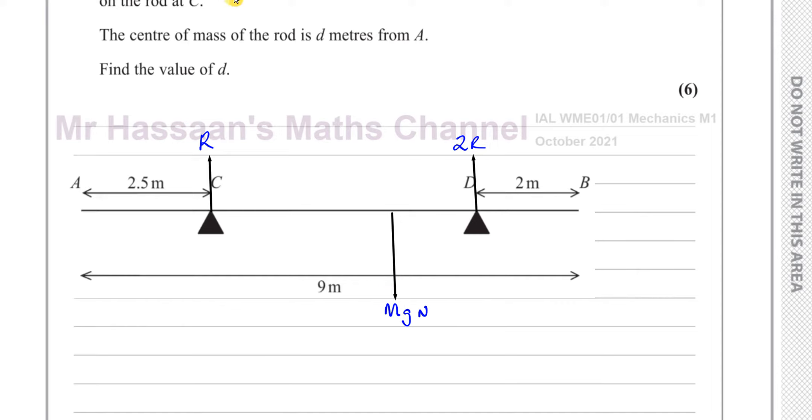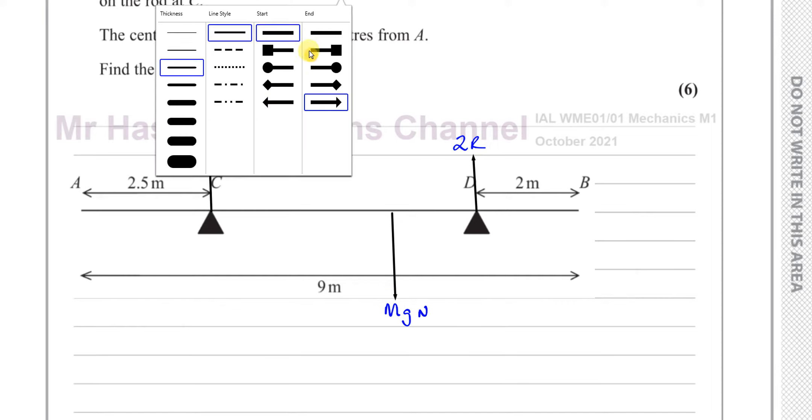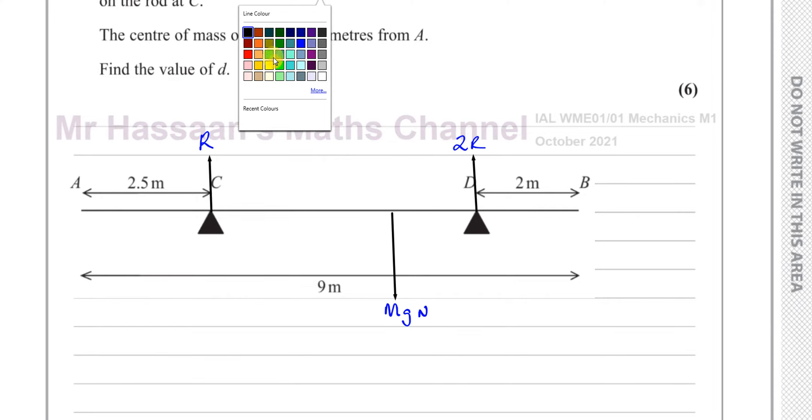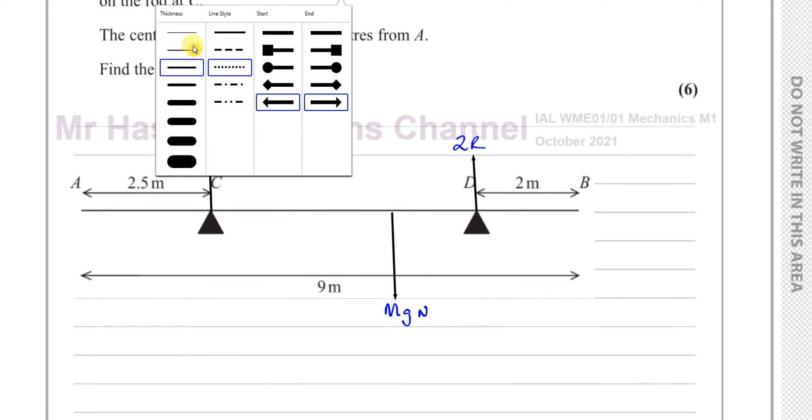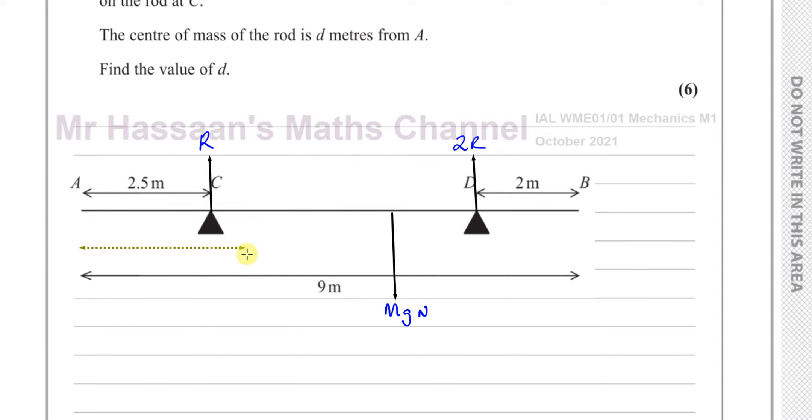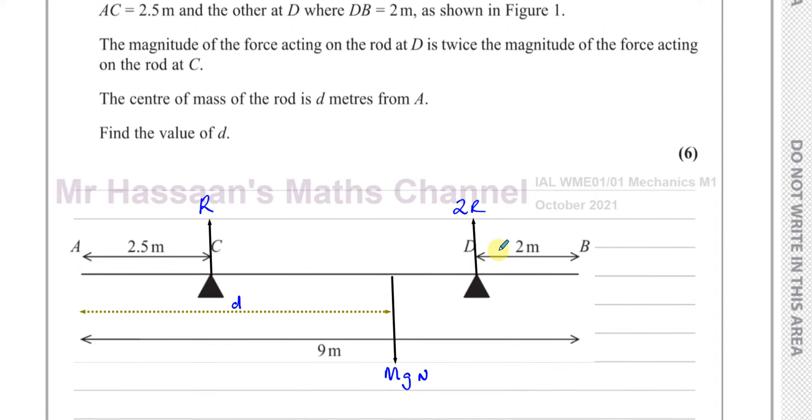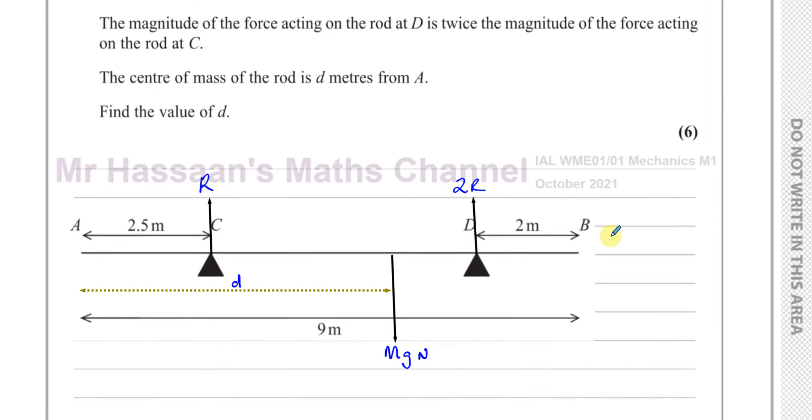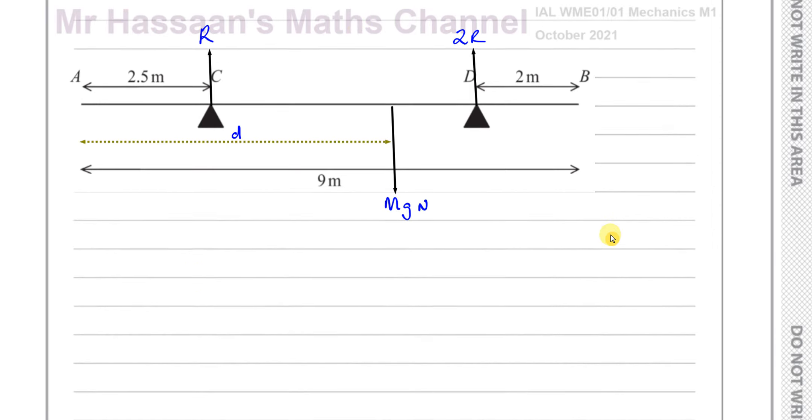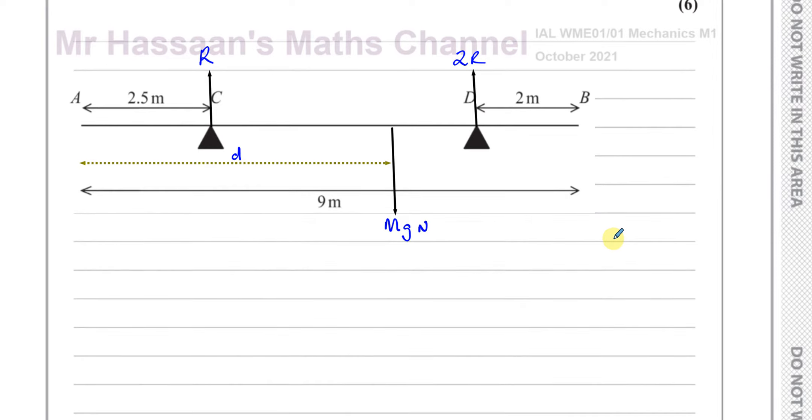And the distance from A of the center of mass is D meters, which is what we have to find in this question. So what we need to do is we can set up a pair of equations. Let's have a look at what equations we can set up.